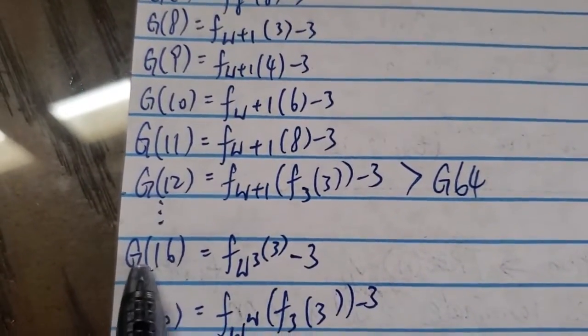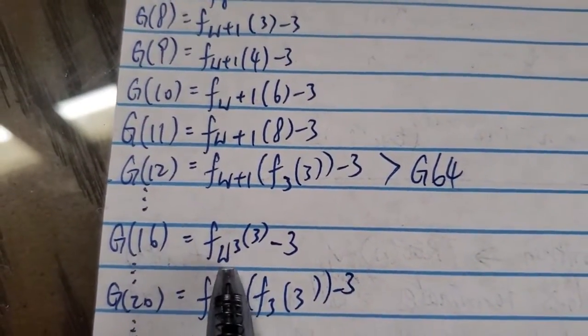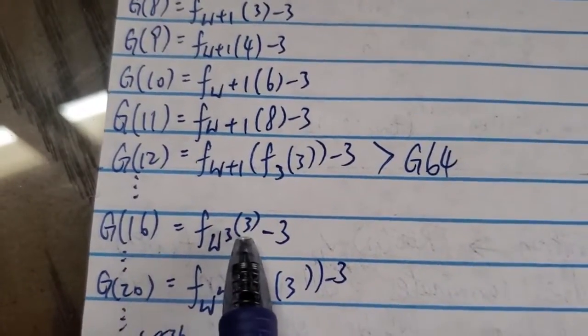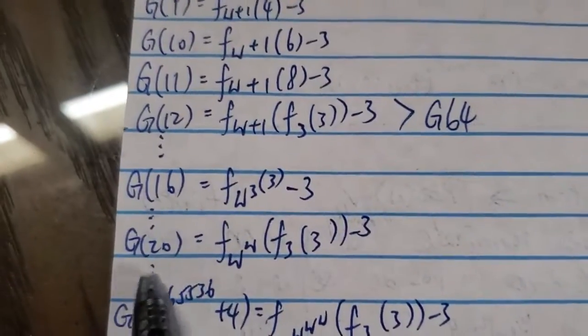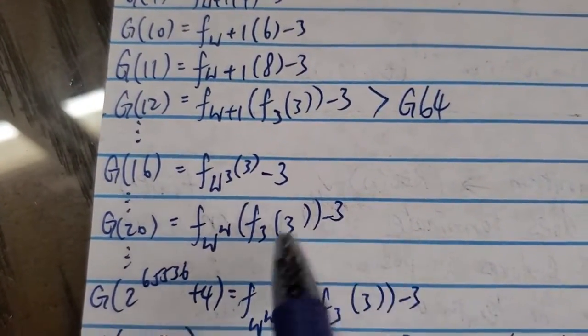And then for, I'm going to skip a few. So g of 16 is already f of omega cubed. So far beyond the g sequence already for, you know, the Graham sequence. For g of 20, it's f omega to the omega.